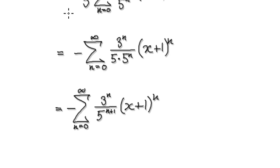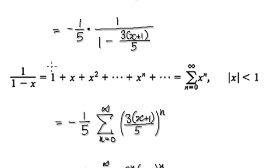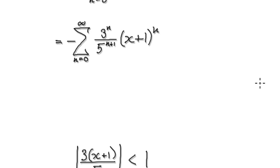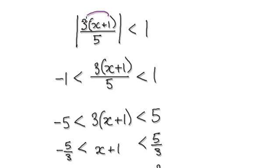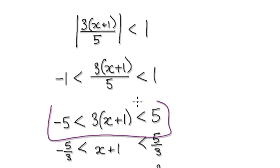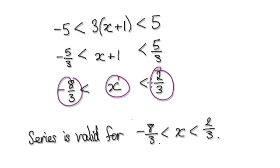But now we need to check the interval for our series — when will our series be valid? Our series will be valid when the absolute value of the bubble is strictly less than 1. Whenever you see this, you can translate it to this: times everything by 5, that will then give you this, divide everything by 3. So our series is valid for x being in between here and here.